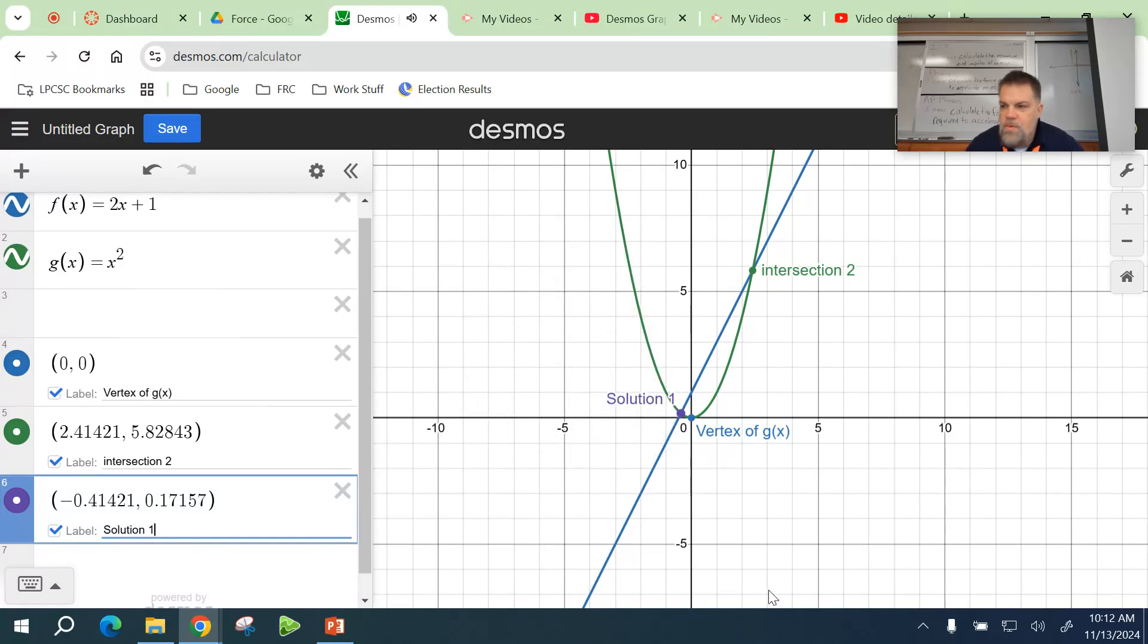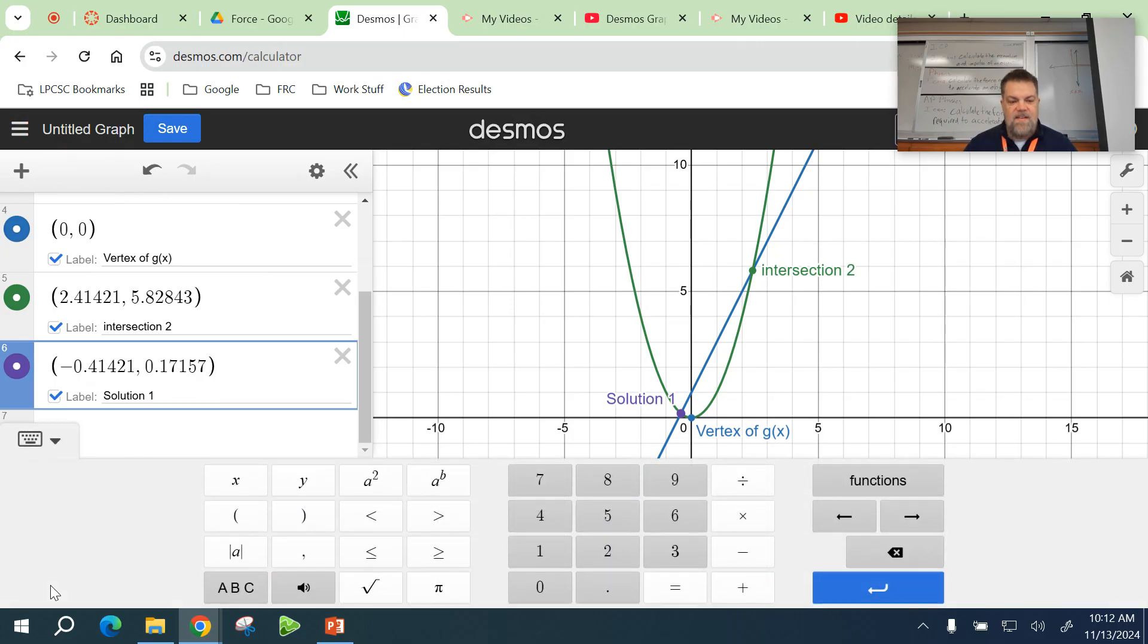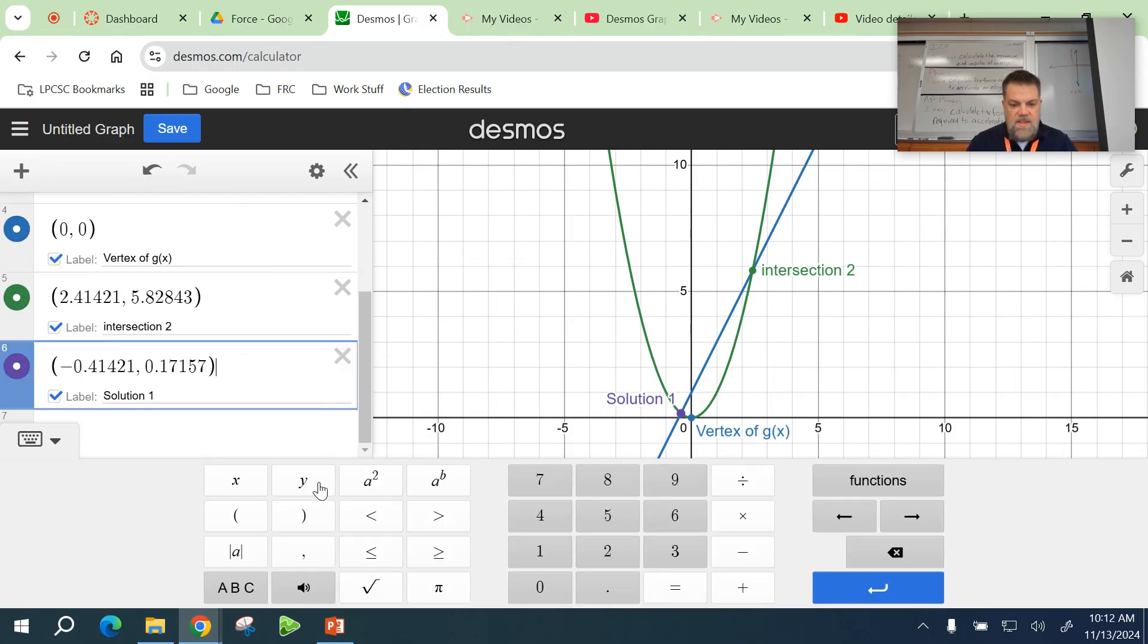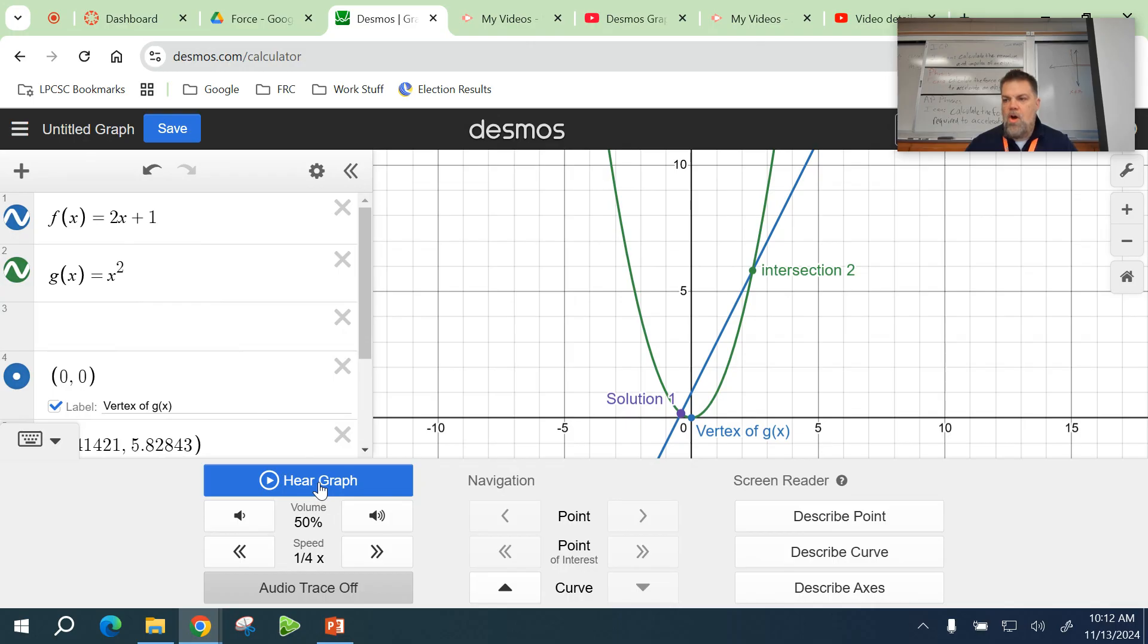Another cool feature on Desmos is if you pull up this keyboard menu and click on the speaker, you can hear the functions. Or if you just hit Alt+T, that turns it on and off. It's called the audio trace.